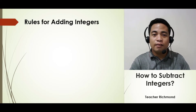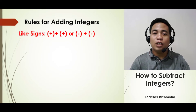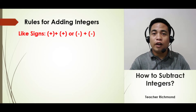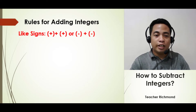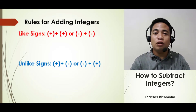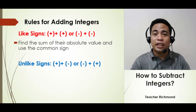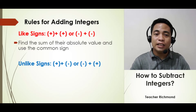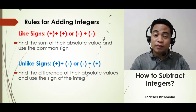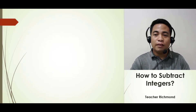We know already from our previous video that there are two rules in adding integers. The first rule is for like signs, meaning you are going to add a positive integer and a positive integer, or you are going to add two negative integers. The second rule is for unlike signs, meaning you are going to add a positive plus a negative or a negative plus a positive. For like signs, find the sum of their absolute values and use the common sign. For unlike signs, find the difference of their absolute values and use the sign of the integer with the greater value.